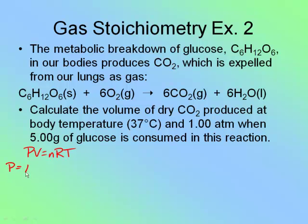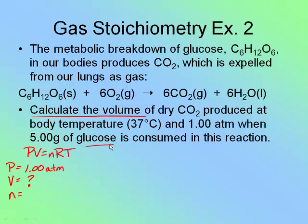My pressure is 1 atmosphere. My volume is what I'm looking for — the problem says 'calculate the volume.' Now, last time I looked for moles (N) because I had the volume. But this time they tell me I have 5 grams of glucose. I can't use that directly to find moles for PV = NRT, because glucose is a solid — but I can do a mole conversion.